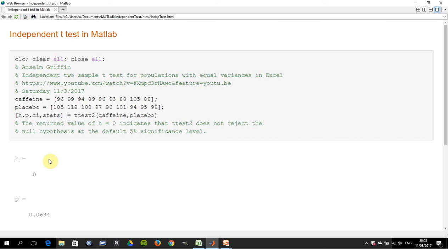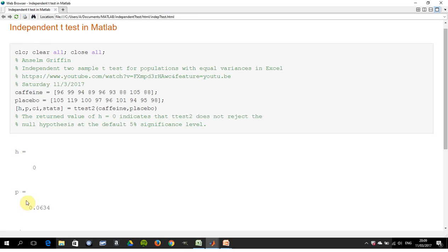H is the hypothesis. When it's zero, we're saying we have no reason to reject the null hypothesis. By the way, it assumes we're carrying it out at five percent. The probability value is 0.0634, and since 0.0634 is bigger than 0.05 or five percent, that's a reason why we're not rejecting the null hypothesis.